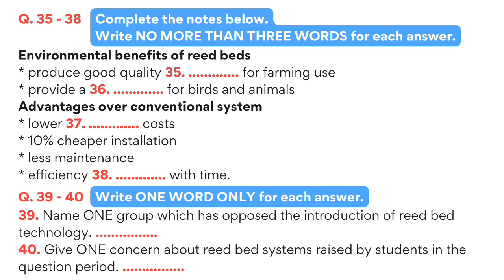But there are practical advantages to a reed bed system over existing sewage treatment plants as well. At all levels, the cost is lower than for normal systems. Labour costs are a fraction of the costs of a conventional system. Typically, a large-scale reed bed installation will cost 10% less than a mechanical system. They require little maintenance and unlike mechanical systems, the efficiency of reed beds increases over time. But before we go any further, you must have some questions. Maybe this sounds too good to be true.